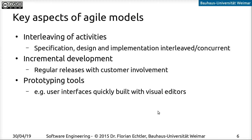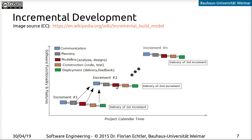These three aspects are the most central things all agile methods share. Probably the most important is the interleaving of activities. Looking at this diagram again: the actual development and deployment happen at the same time as the communication and planning phases for the second iteration. Immediately after deployment finishes, we already start with the modeling and construction for the next part — so some phases actually happen in parallel.